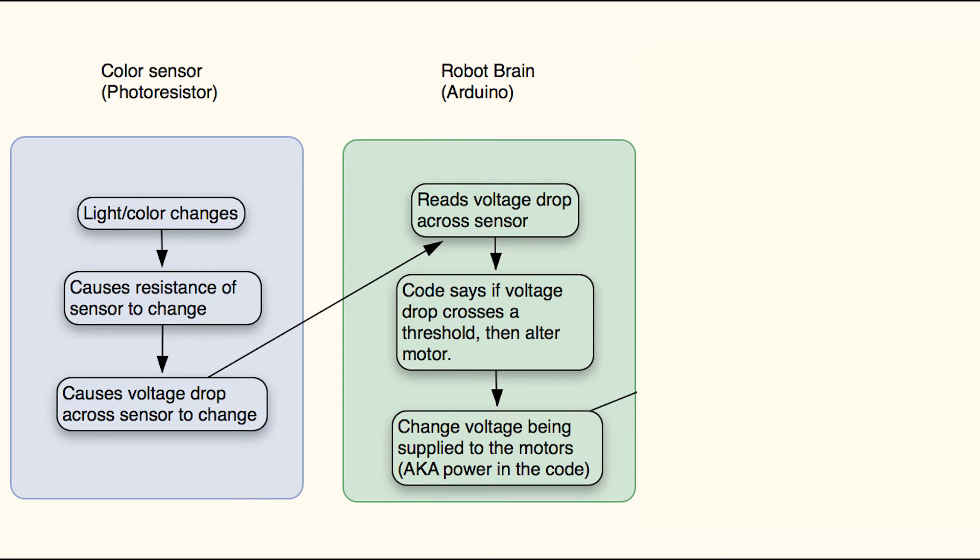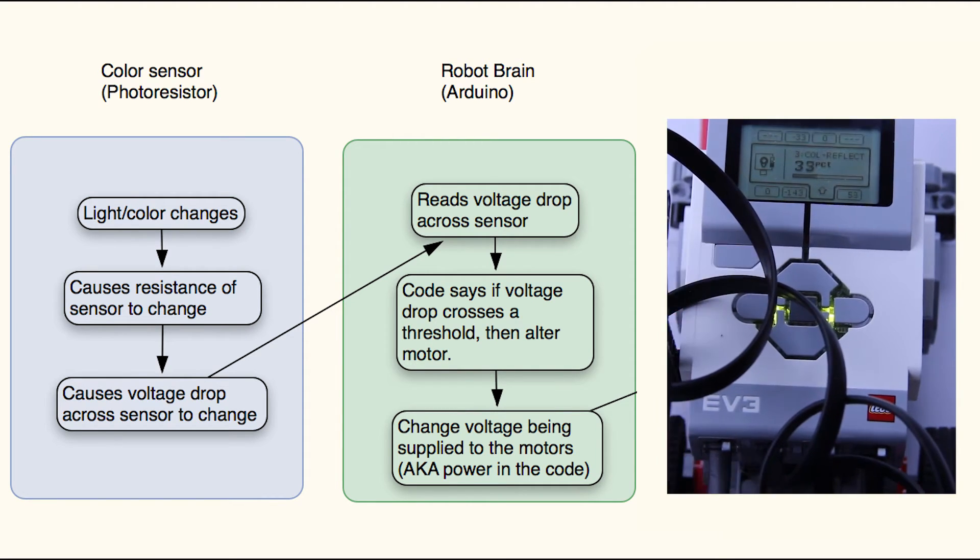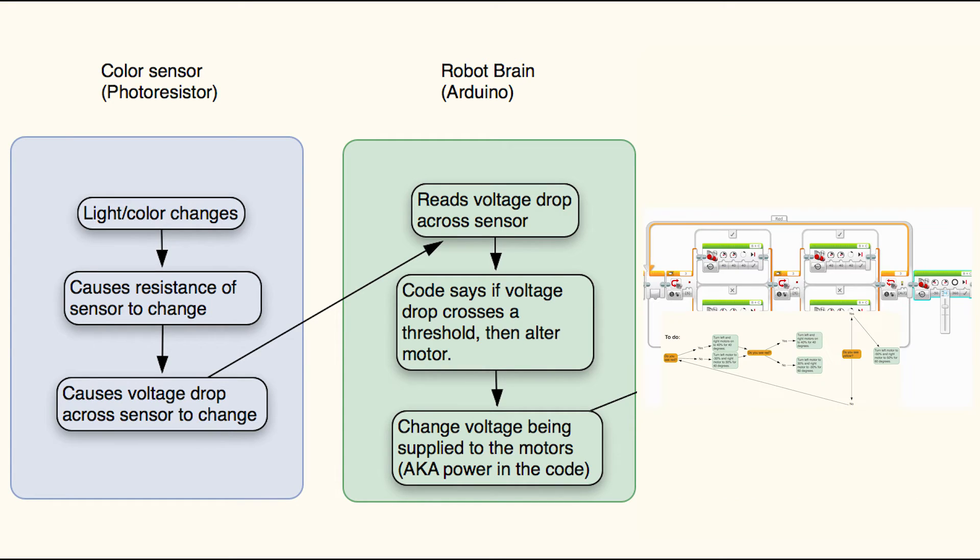This means voltage across it will change. The robot's brain, which is similar to our Arduino, reads the change in voltage from that sensor. In our program that we wrote, the robot knows that when the color value changes, it needs to turn the robot.